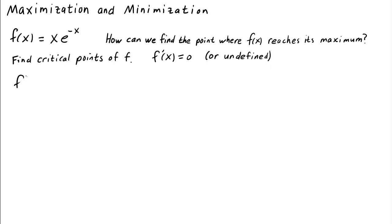How do we calculate the derivative f prime of x? f is x times e to the negative x. It's a product, so we should use the product rule. It's the derivative of x, which is 1, times e to the negative x, plus x times the derivative of e to the negative x.